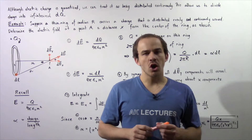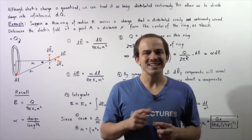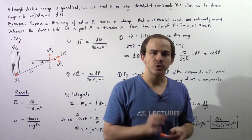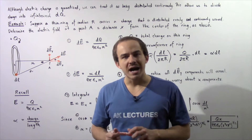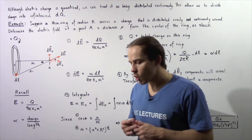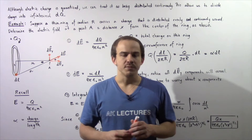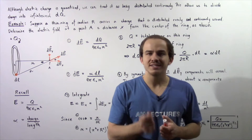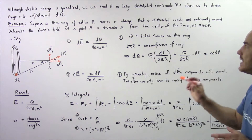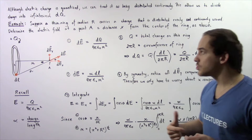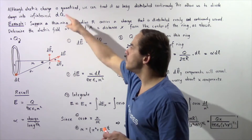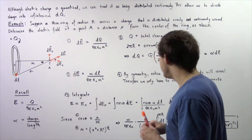Recall that in our discussion on electric charge, we said that electric charge is quantized on the microscopic level. That basically means that electric charge exists only in discrete pieces, in discrete increments. The smallest possible increment of electric charge is about 1.6 x 10 to the negative 19 coulombs, which is the charge found on one electron. Even though electric charge is quantized on the microscopic level, on the macroscopic level we can treat electric charge as being distributed continuously, which allows us to divide our electric charge into infinitely small pieces given by dQ. That's exactly what we're going to do in this lecture.